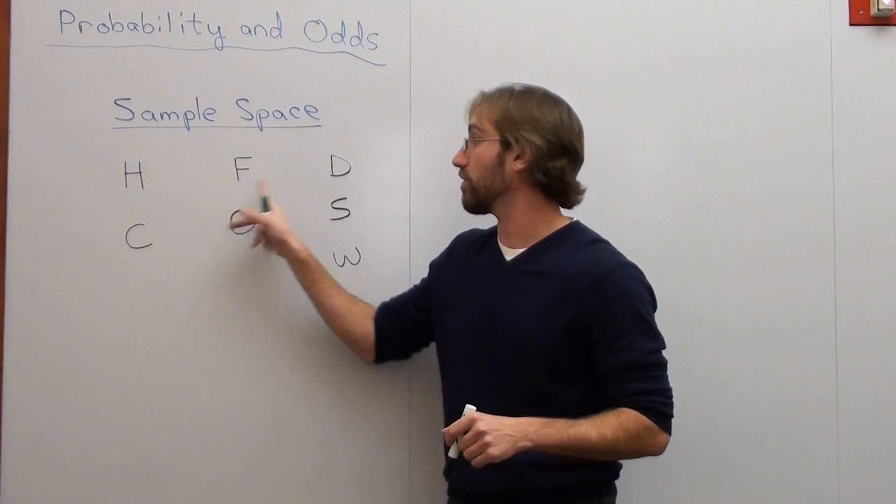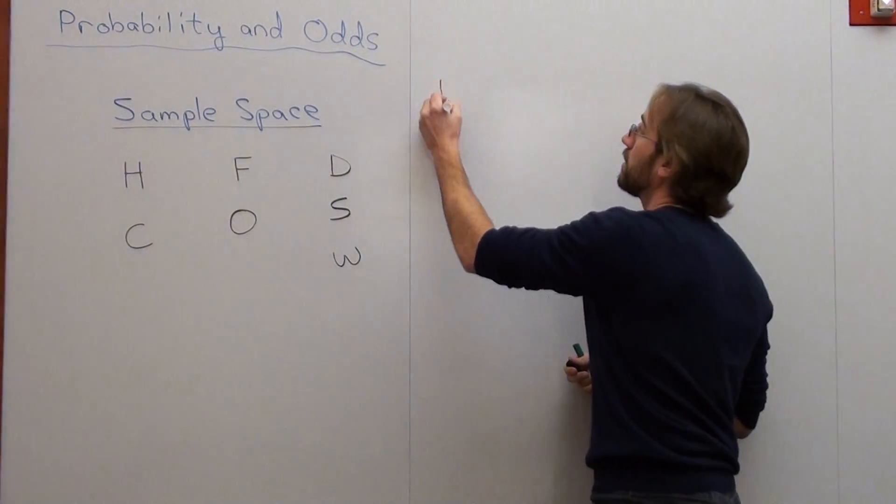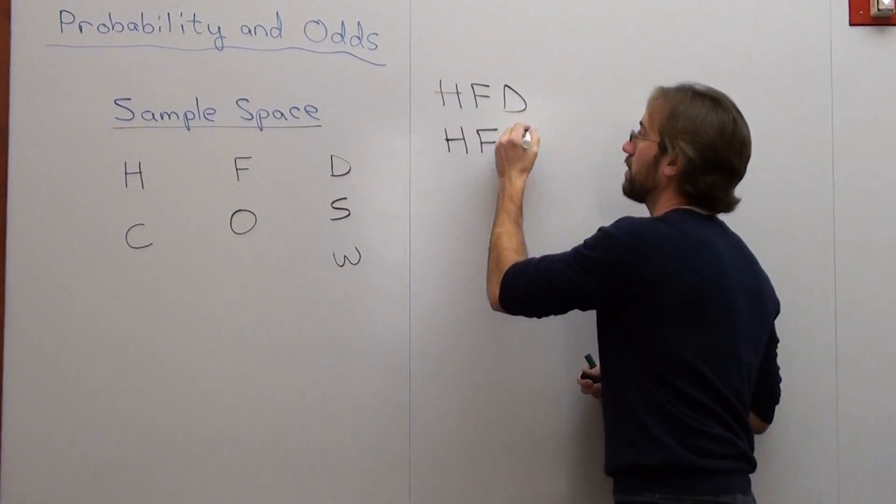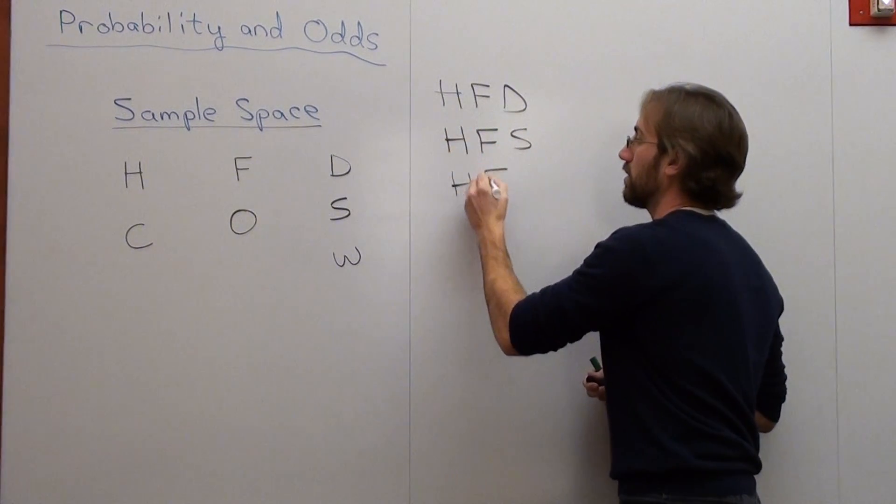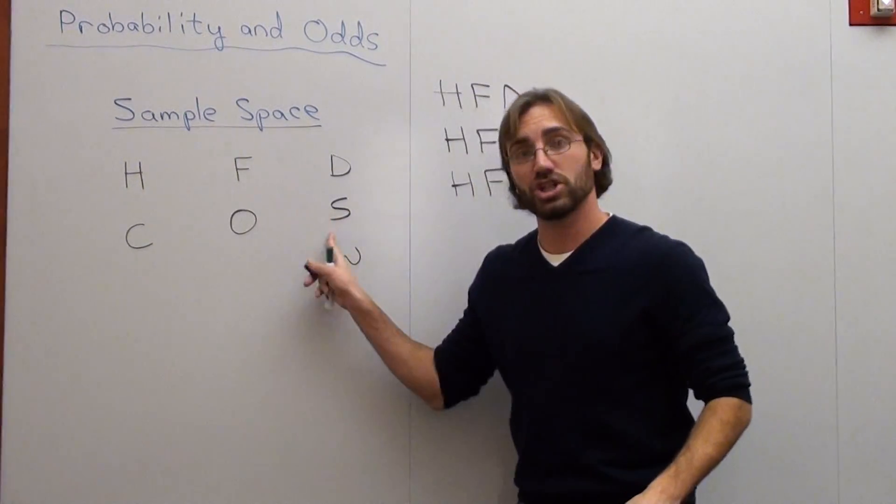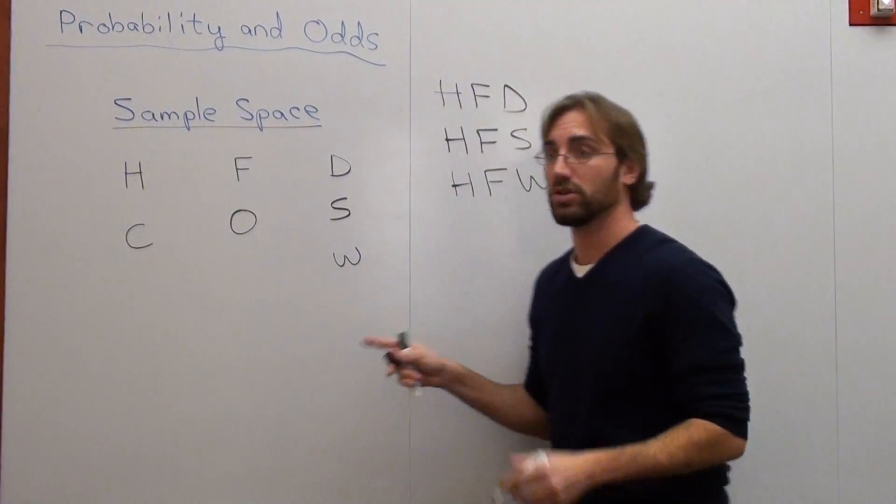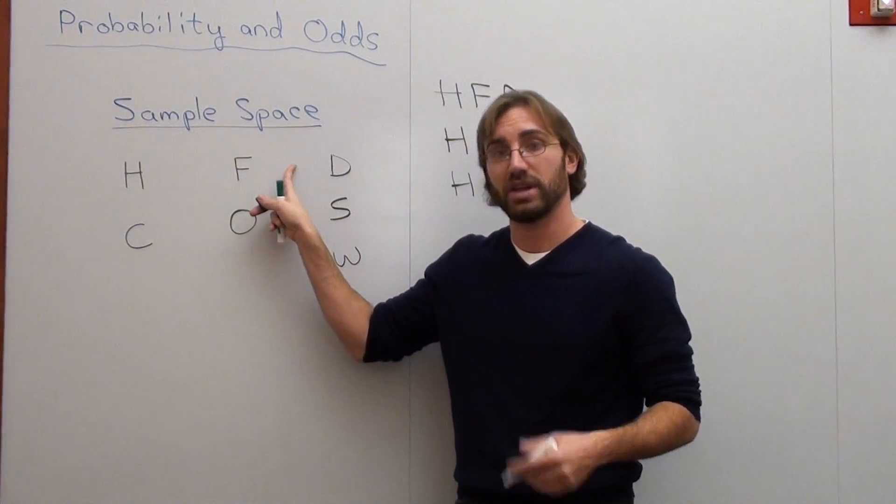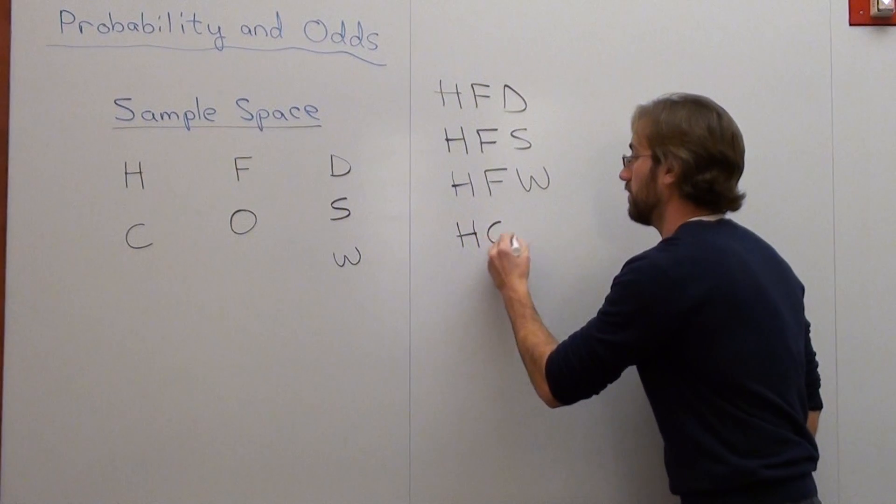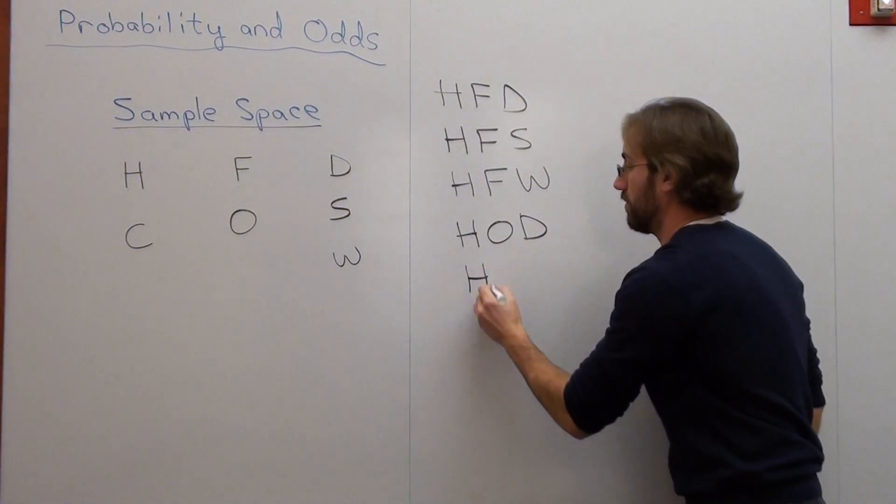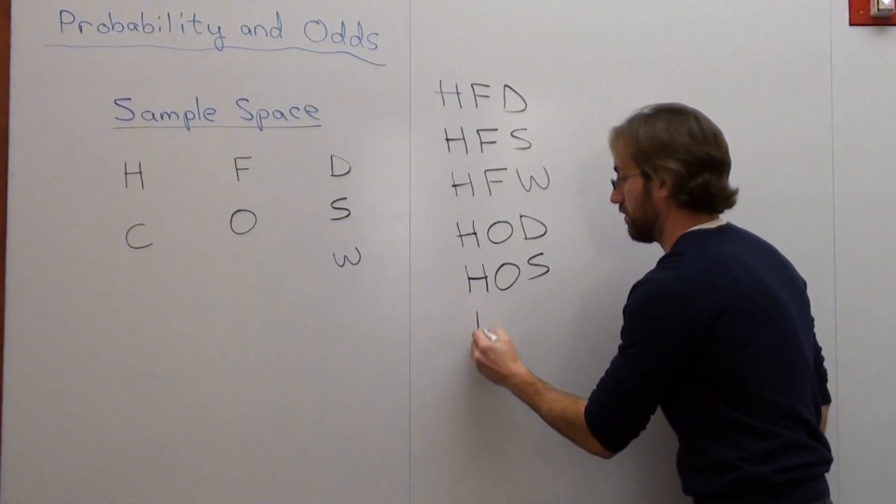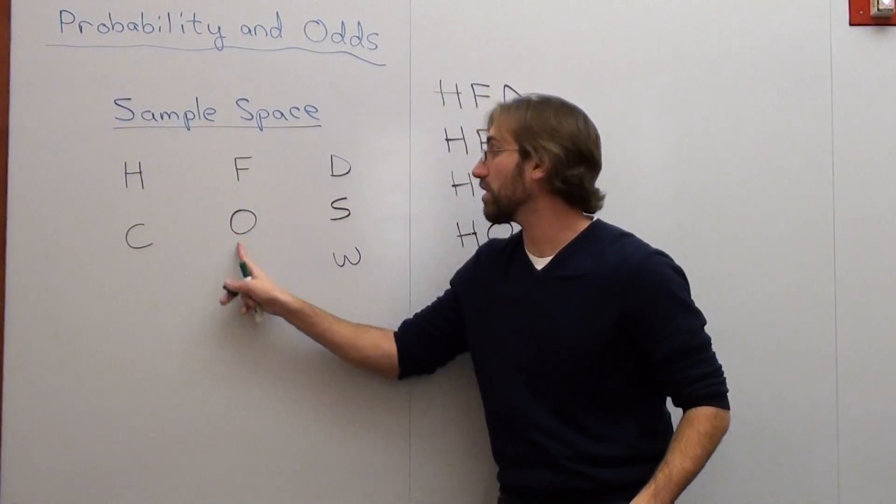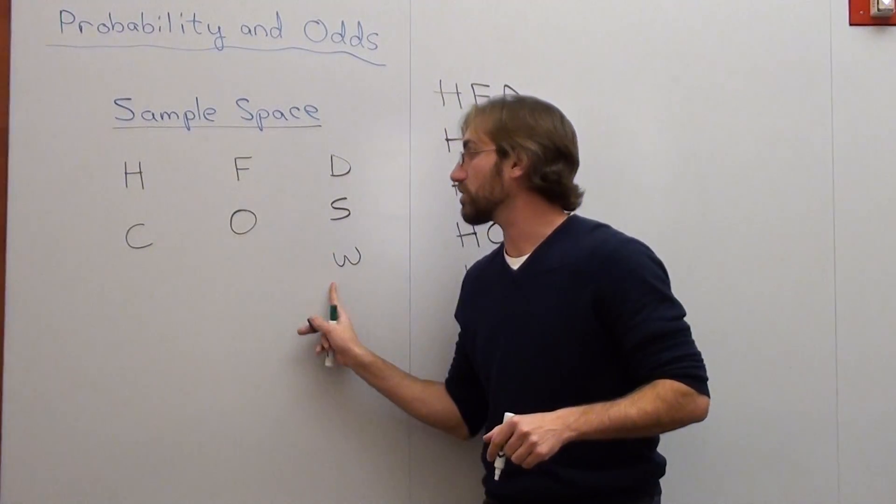So I can have a hamburger, fries, and a diet coke. Hamburger fries shake, hamburger fries water. So that's three options. Now let's try something else. Let's try hamburger onion rings and then diet coke. Hamburger onion rings, shake. Hamburger onion rings, water.